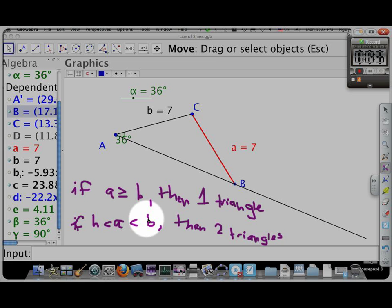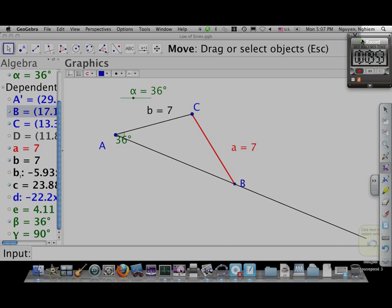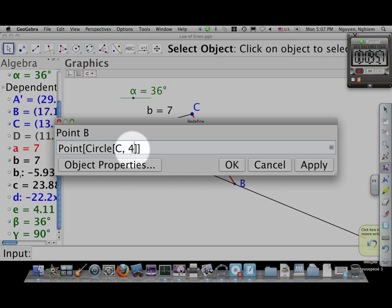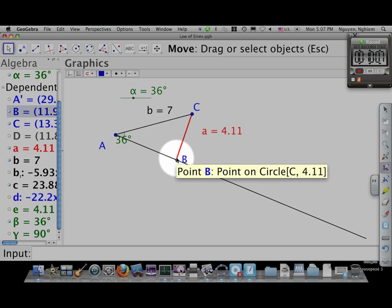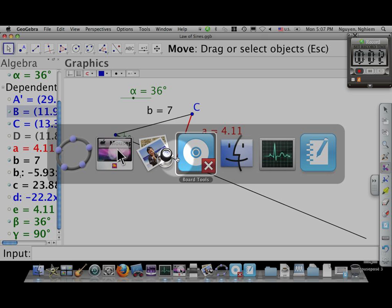So if A is greater than or equal to B, then we can only make one triangle. If A is between H and B, then we can make two triangles. And one more scenario is that if A is equal to H, so what if A is equal to H? So what if it was 4.11? Well, in this case, I can make a triangle. And in fact, I can only make one triangle. So if A is equal to H, I've got to make one triangle, and it's going to be a right triangle. And so let's go back to our notes here so we can sort of put all of this together.